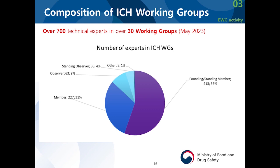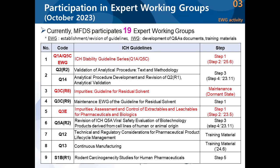Most of the experts are from founding or standing members, but our members are also quite actively participating. As for the MFDS, it participates in 19 expert working groups. Beginning this year, we are starting work on the new Q1A and Q5C stability guideline series, which is already undergoing revisions. Meetings have been convened since last year because the EWG was formed last year, and we will be working on this very hard beginning in 2023. The target is to make it step two by June 2025.